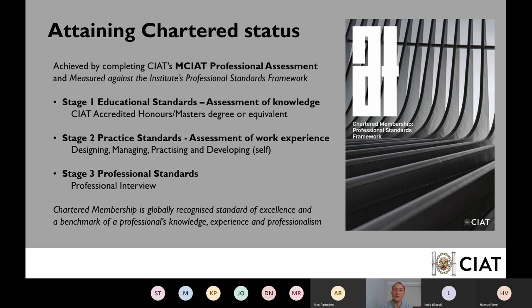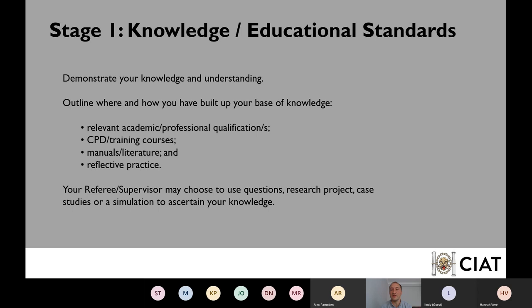Just in case you don't have an accredited degree — say you've got an RIBA Part One or a construction management degree — you're not exempt from our educational requirements because it's not an accredited programme. You'll need to extrapolate and draw out your knowledge and understanding of our respective Stage One requirements: where and how you've got that knowledge. You can refer back to academic qualifications, module content, alternative professional qualifications, CPD, training courses, articles, manuals, or knowledge picked up through your career from colleagues.